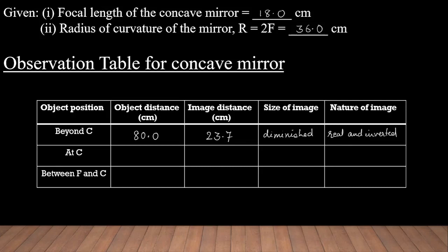Now let us keep the object at C and you can see the screen is moving towards the center of curvature. A beautiful image is formed on the screen which is real, inverted, and of the same size, formed at C. Object distance: 36.0 cm; image distance: 36.0 cm; size: same size; nature: real and inverted.